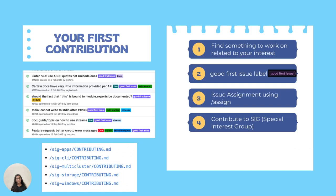You can assign an issue to yourself by going to it and typing '/assign' in the comments — the GitHub bot will assign it to you. Then you can contribute to a Special Interest Group. Under SIG there are many projects such as SIG Apps, CLI, Multicluster, Storage, and Windows, with many sub-projects under each. This was all about how to get involved in the Kubernetes community and SIG.